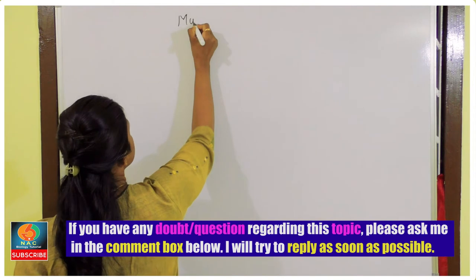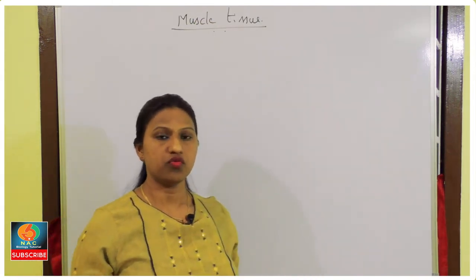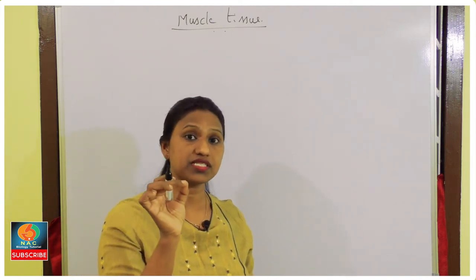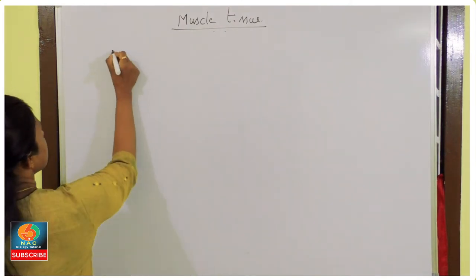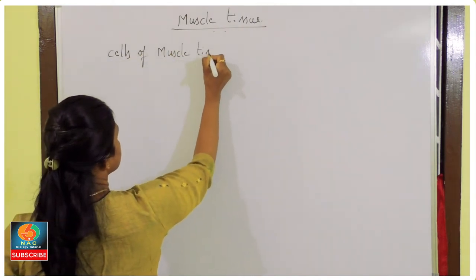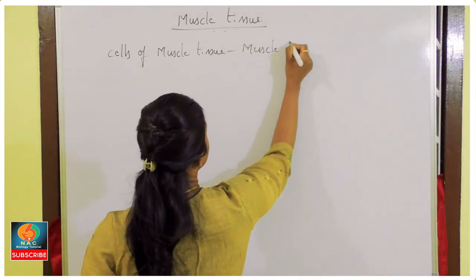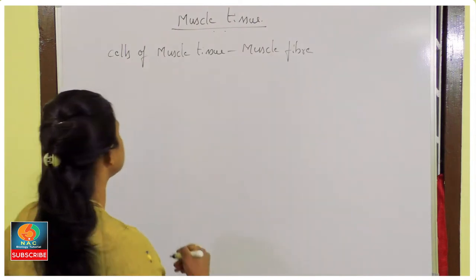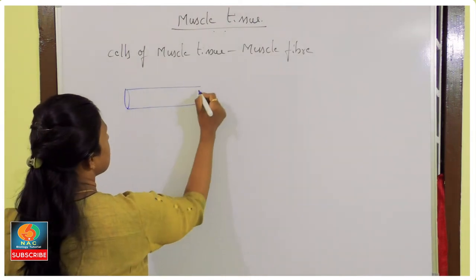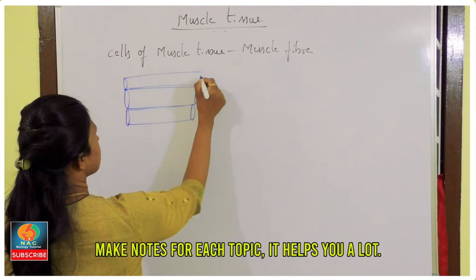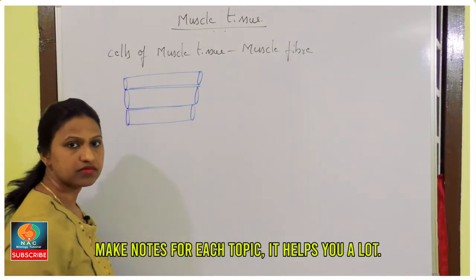Let's begin with muscular tissue or muscle tissue. If you take a section of a muscle, the cells present in that tissue are called muscle fibers. These muscle fibers are generally cylindrical in structure, and these cylindrical cells are arranged in parallel.